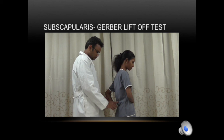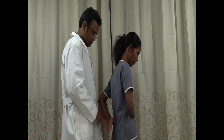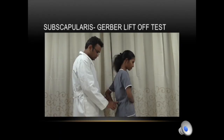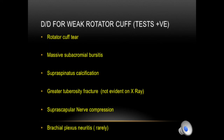In the lift-off test, check the power and see if it is weak. Normally the patient can lift the hand off the back; if they cannot, it is a positive Gerber test and is also positive in subscapularis rupture. The differential diagnosis for weak rotator cuff testing includes: rotator cuff tear (most likely), massive bursitis, supraspinatus calcification, greater tuberosity fracture (sometimes not evident on X-ray), suprascapular nerve compression causing supraspinatus and infraspinatus weakness, and brachial plexus neuritis.